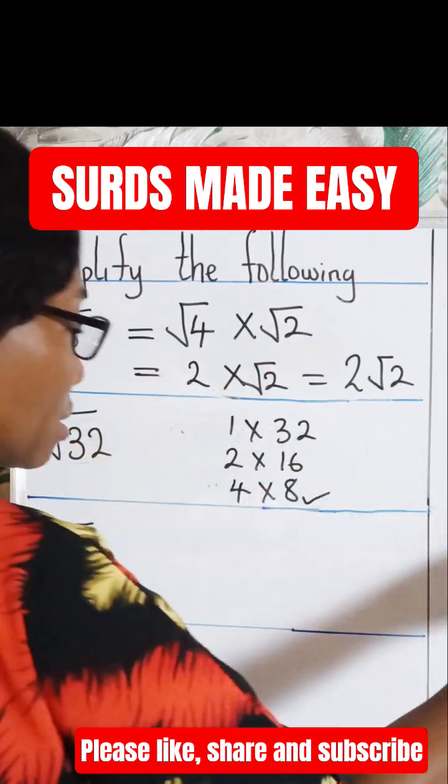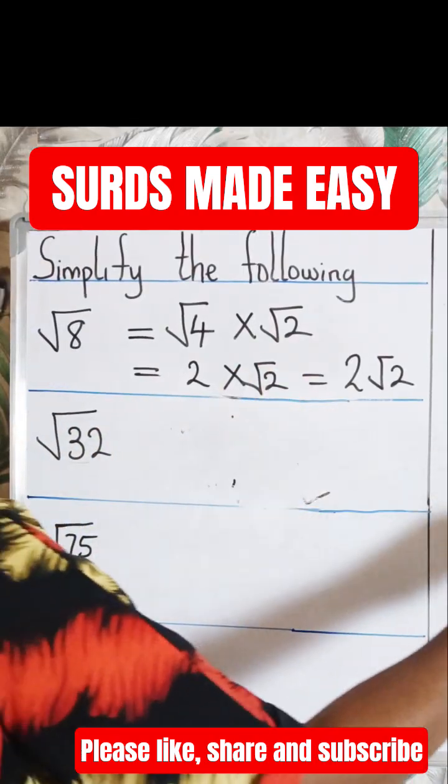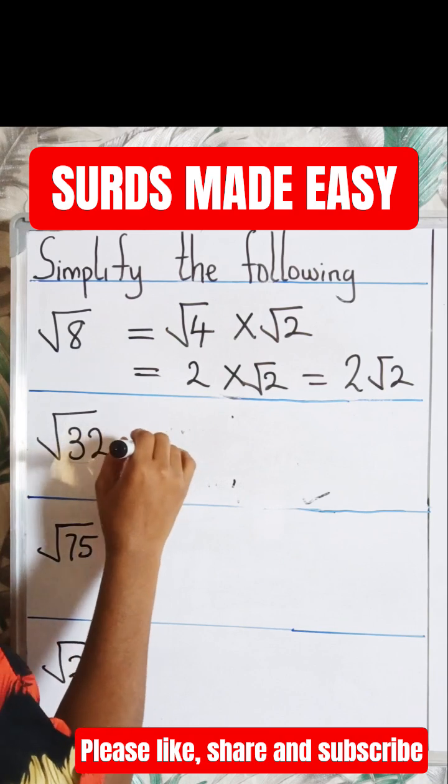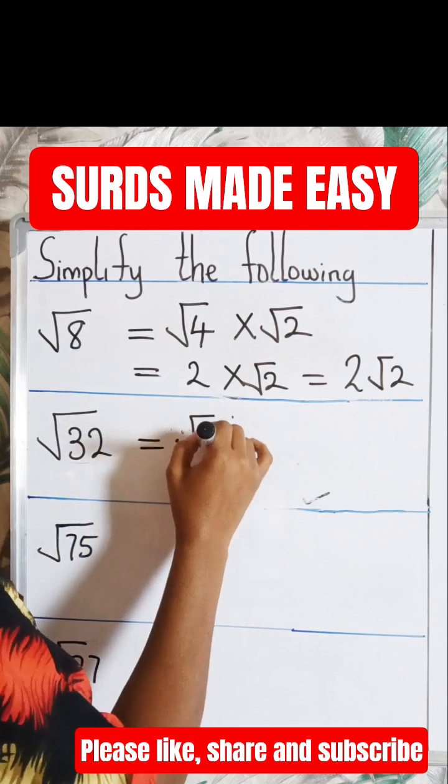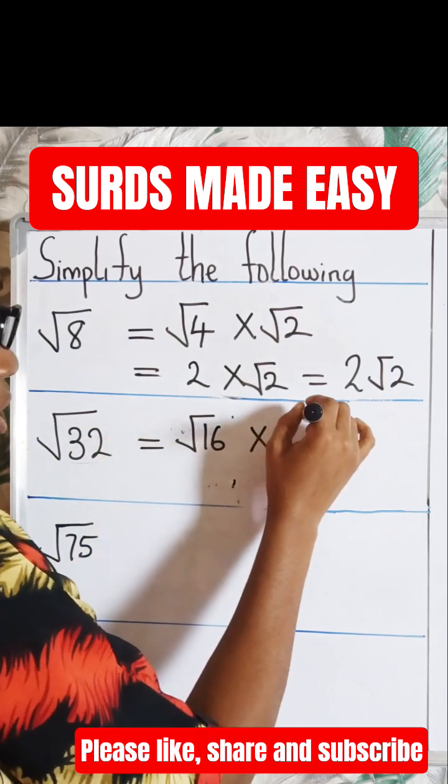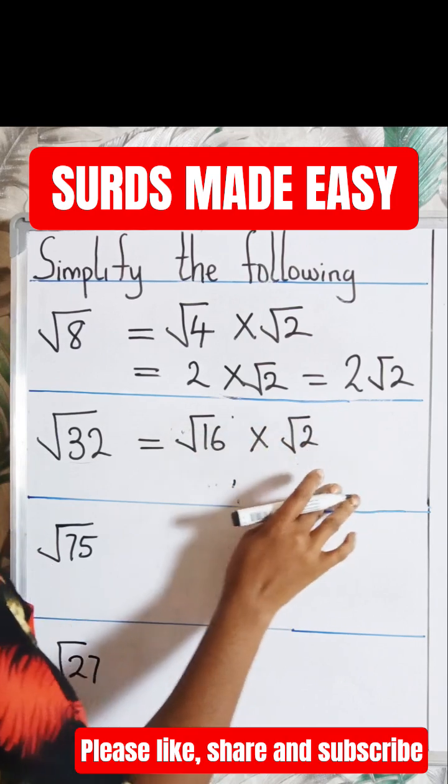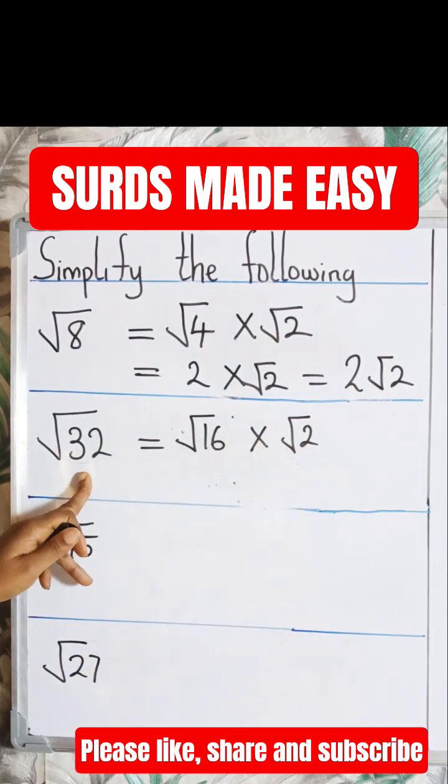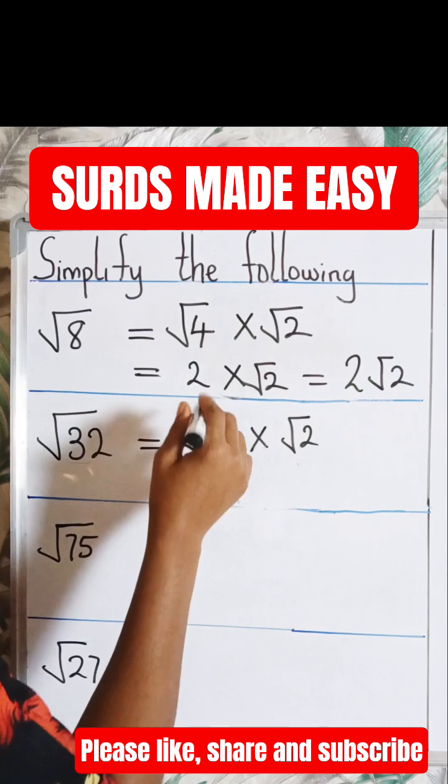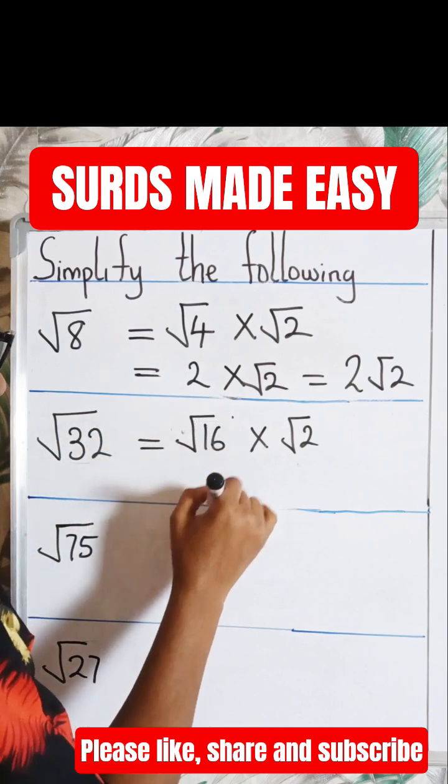Root 32 is equal to the square root of 16 times the square root of 2. If you multiply these two, you'll still get 32. So this is equal to root 16 is 4 times root 2.